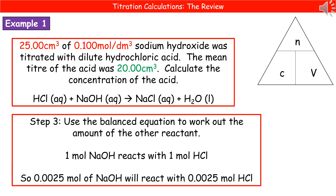The third step is we need to look at that balanced equation, because we need to know the ratio of the reactants to one another. In this case, we've got 1 mole of sodium hydroxide reacting with 1 mole of hydrochloric acid. We've just worked out that we've got 0.0025 moles of sodium hydroxide. Therefore, applying those same proportions, we must have 0.0025 moles of hydrochloric acid.